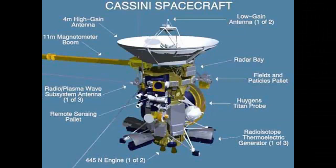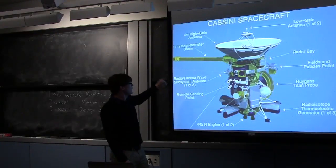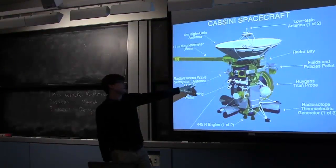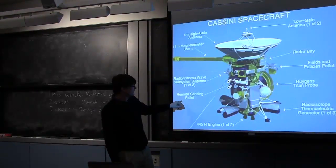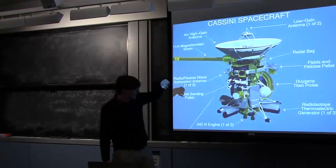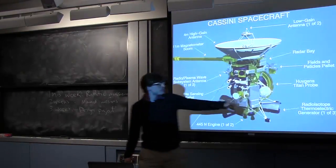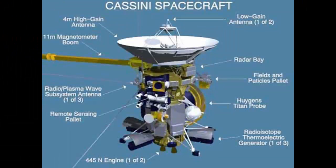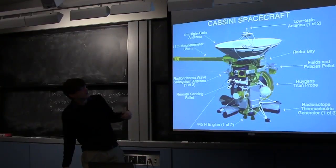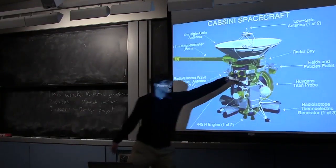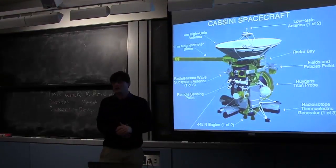So this is a really long magnetometer boom from Cassini so it senses magnetic fields. It uses low gain antenna and the high gain antenna to communicate with Earth. Plasma wave subsystem antenna so that measures plasma waves. Remote sensing palette, I think that's a whole suite of instruments there. Radio isotope thermal generator so that's his power source. That's Huygens probe. This fields and particle palette will have all kinds of sensors to measure magnetic fields and charged particles and things like that. And it also has radar so it can do radar maps of moons of Saturn and Saturn itself.